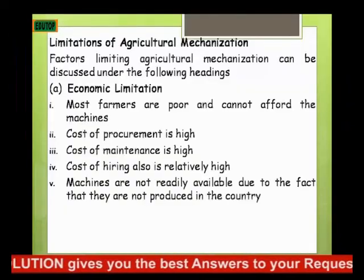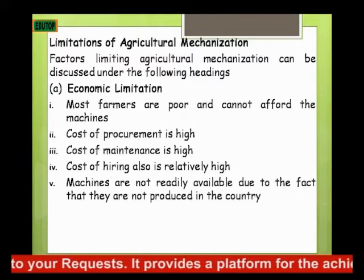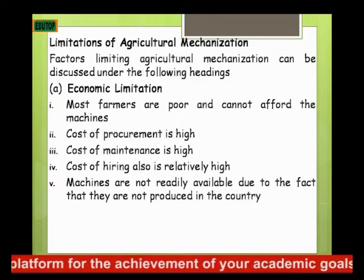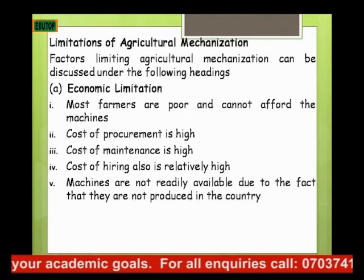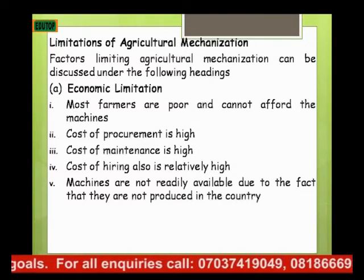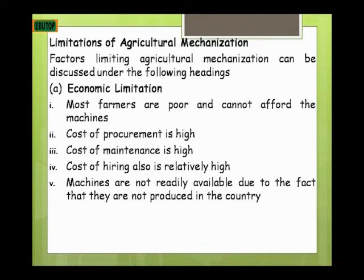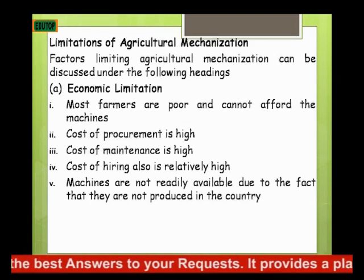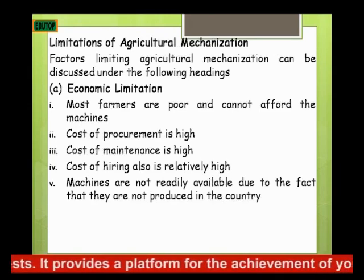The limitations of agricultural mechanization can be discussed under the following areas: economic limitations, technical limitations, and small farm holdings limitations. Regarding economic limitations, most farmers are poor and cannot afford the machines. Due to their economic situation, they don't have enough money to buy a tractor, which, if not subsidized, can sell at market prices of about 10 million and above.